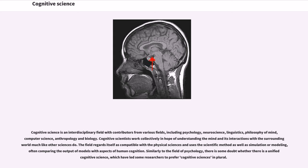Cognitive science is an interdisciplinary field with contributors from various fields, including psychology, neuroscience, linguistics, philosophy of mind, computer science, anthropology and biology. Cognitive scientists work collectively in hope of understanding the mind and its interactions with the surrounding world much like other sciences do. The field regards itself as compatible with the physical sciences and uses the scientific method as well as simulation or modeling, often comparing the output of models with aspects of human cognition. Similarly to the field of psychology, there is some doubt whether there is a unified cognitive science, which have led some researchers to prefer cognitive sciences in plural.